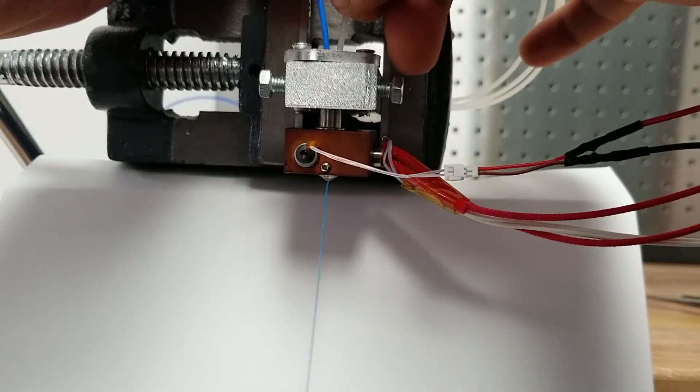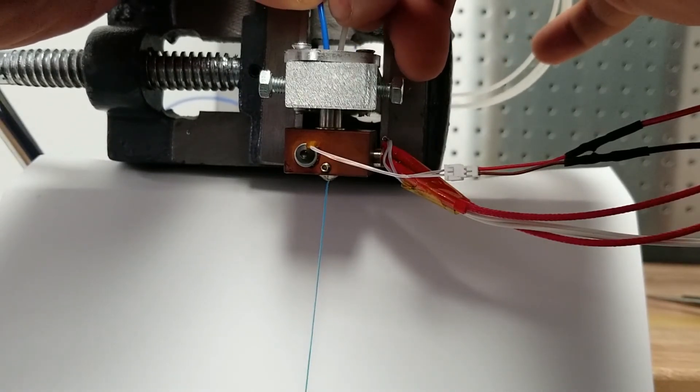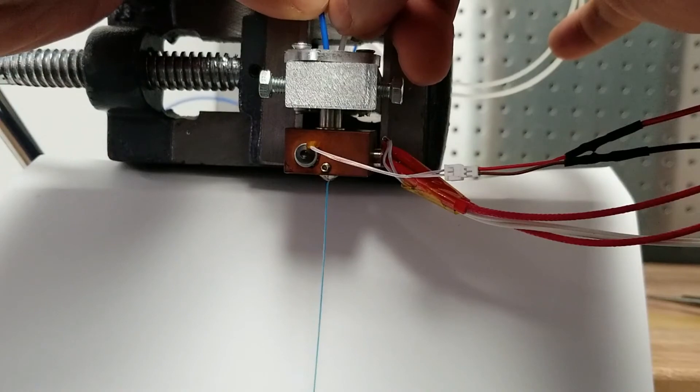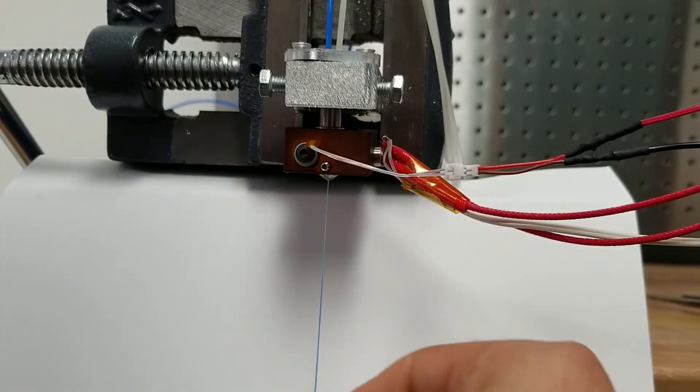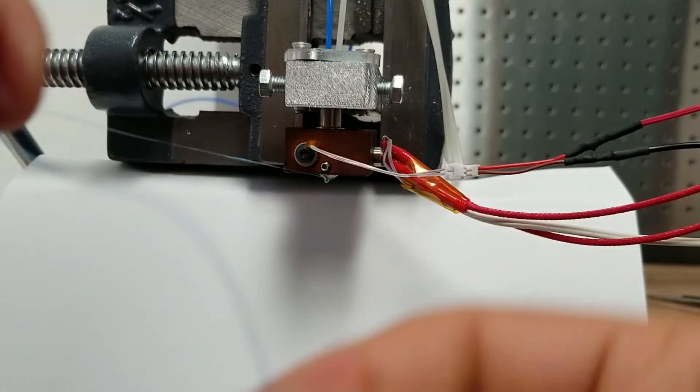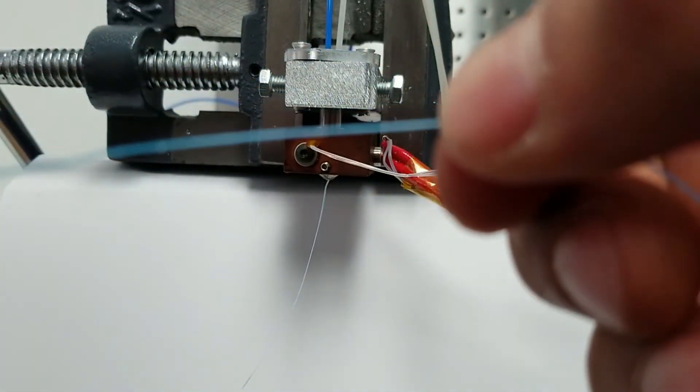But the point is you can actually do the same thing. I'm co-extruding right now, about 50-50, so I've created a hybrid material here that's one part soluble support and one part PLA.